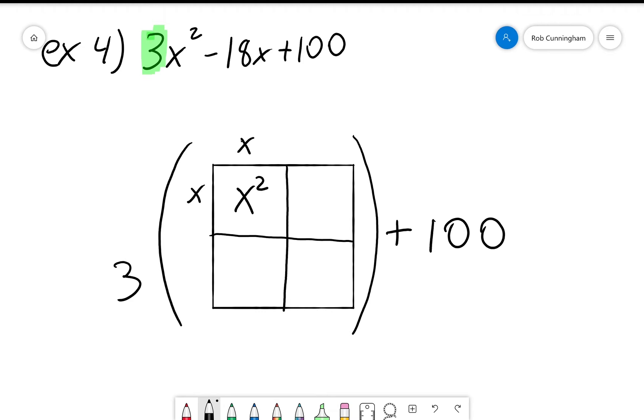Let's see. Negative 18 divided by 3 is negative 6. So I've got negative 6x to fill these two regions. So negative 3x and negative 3x is the only way I can do that and maintain a square shape. That means I have x minus 3 times x minus 3.